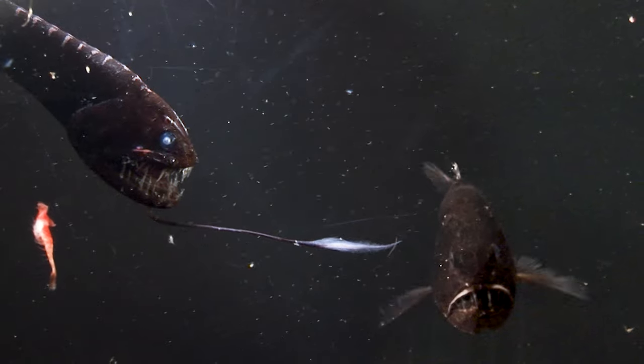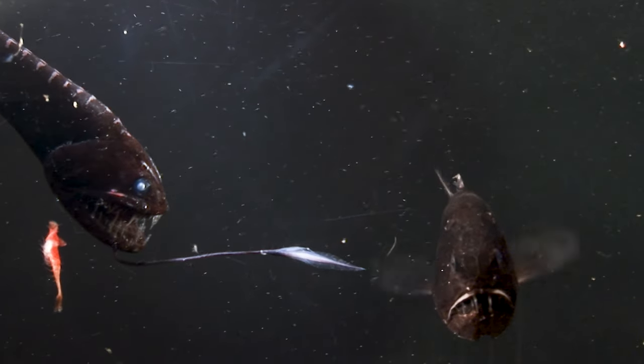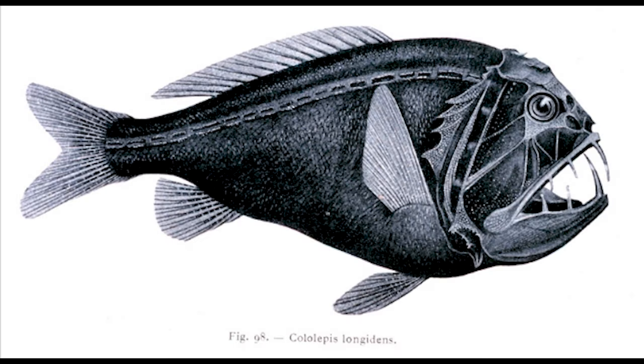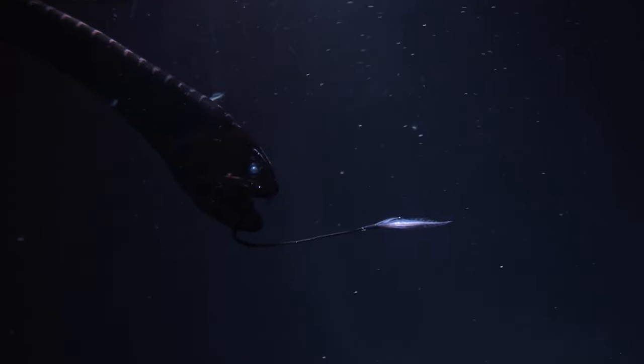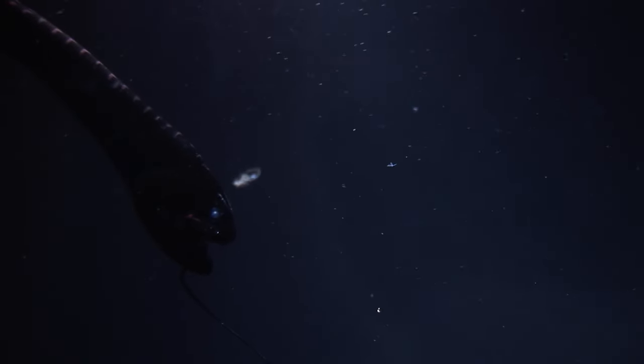So despite their differences, the fangtooth and the dragonfish have many things in common. The first thing you notice is they're both black. In the dragonfish, surprisingly black. They're using pigments that absorb light like crazy, and that's because they don't want to be seen either by prey or predator.